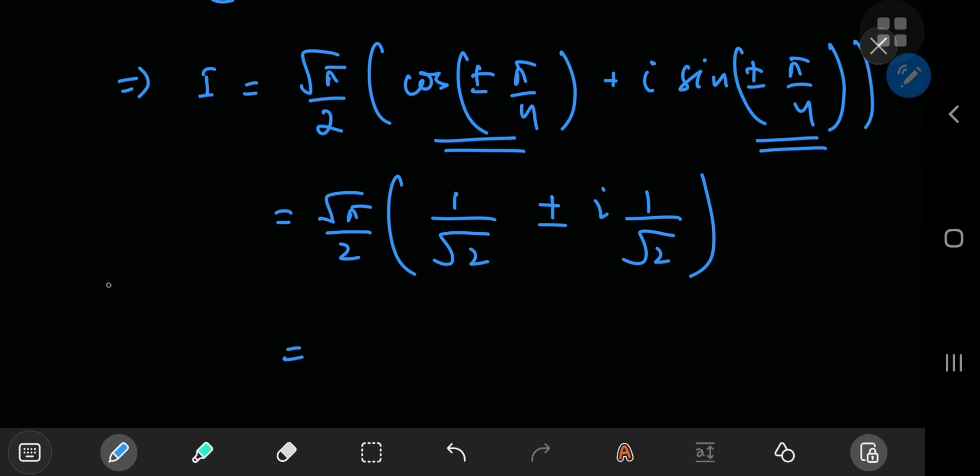okay, remember 2 times square root 2 is square root 8. So that means you have square root pi by 8 plus i plus or minus square root pi by 8.